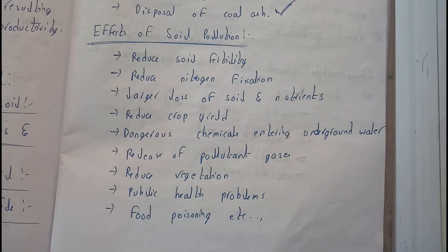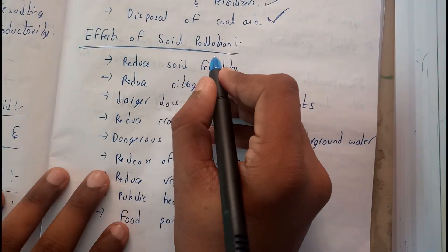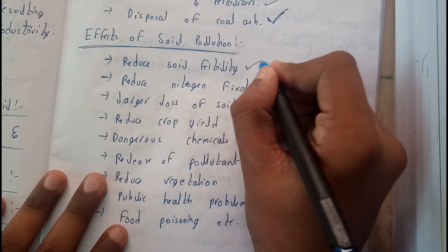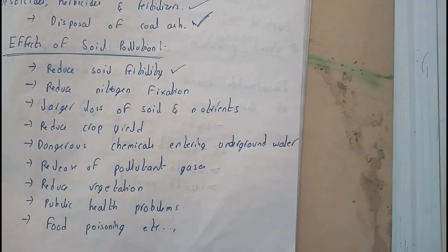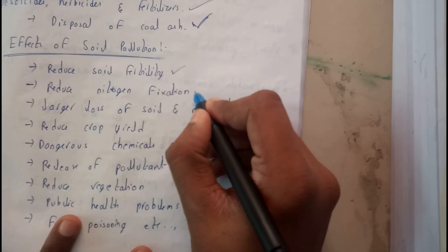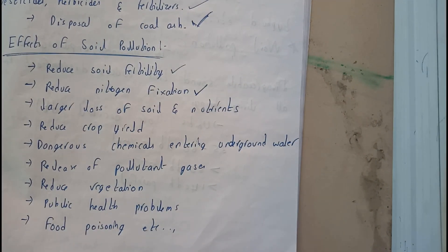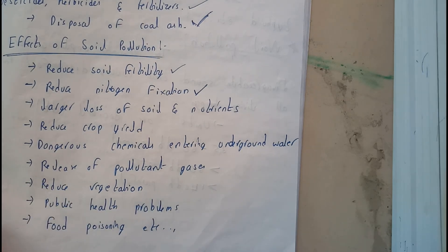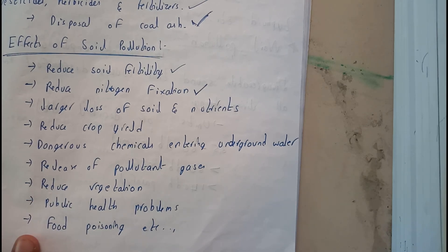Now let's go through the effects of soil pollution. Soil pollution reduces soil fertility — we discussed that only 2.5 centimeters is the fertile layer. It also reduces nitrogen fixation. In our surroundings, the maximum percentage is nitrogen, and nitrogen is one of the most important nutrients for plants.